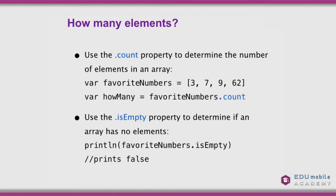We can use the count property of an array to determine the number of elements. For example, favoriteNumbers.count returns an integer. We can also check if an array is empty using the isEmpty property, which returns a boolean — so print(favoriteNumbers.isEmpty) will print false. This is a convenience property; we could also check if count equals zero, but isEmpty is simpler.